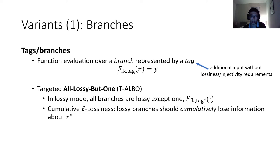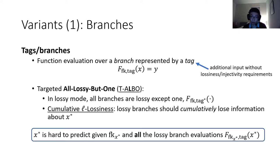So what this means is that if I give you an output on any lossy branch, it should be hard to recover X star. But we actually want something slightly stronger: it should be hard to recover X star even given the image of the function on all applications on the lossy branches. Namely, X star should be hard to predict given all those values — all corresponding to tags that are lossy and the function key that depends on X star.